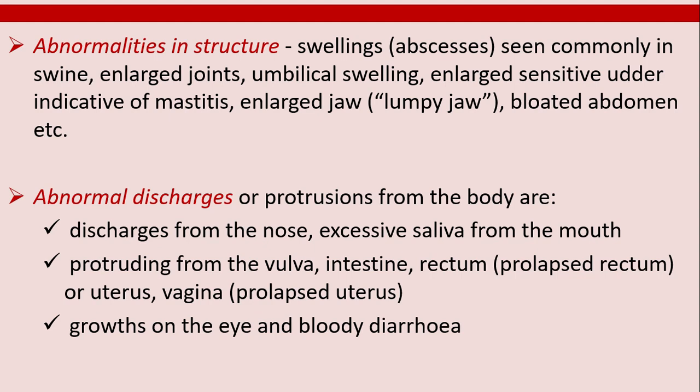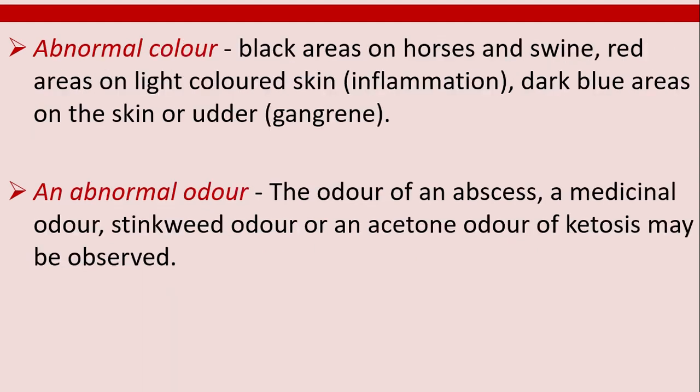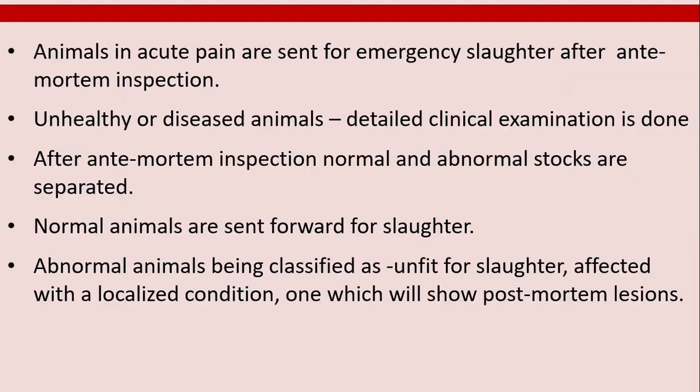Abnormal color includes black areas on horses and swine, red areas on light-colored skin, and dark blue areas on the skin or udder. Abnormal odor includes the odor of an abscess, a medicinal odor, stinkweed odor, or an acetone odor of ketosis.